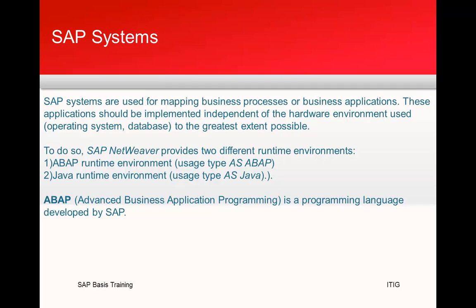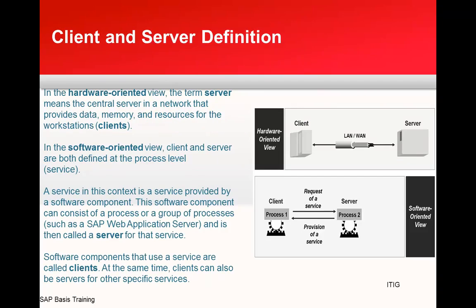Let's go to the next slide on client and server definition. The first figure shows a hardware-oriented view, where a client is trying to connect to a server over a WAN or LAN. The second is a software-oriented view, where a client — essentially process one — is trying to send a service request to a server, which is process two.